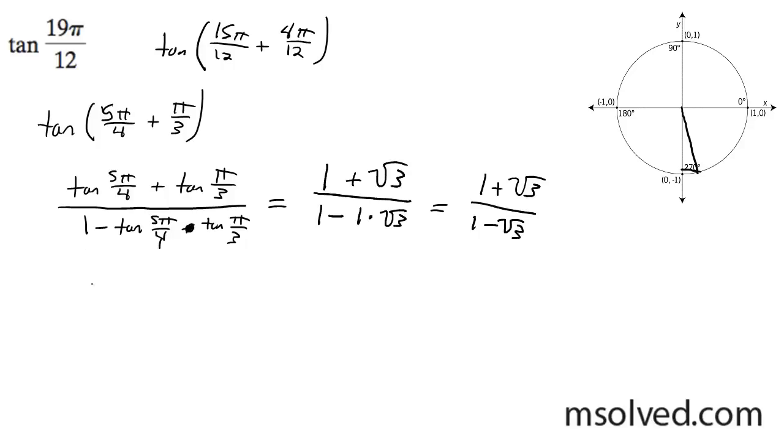So what we can do here now, bring this down, get rid of the radical on the bottom. I'm going to take the conjugate of that, 1 minus root 3. So I'm going to do 1 plus root 3 over 1 plus root 3.